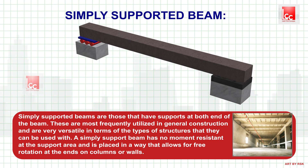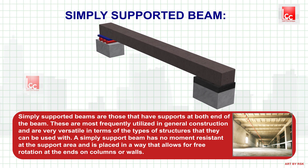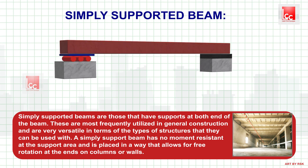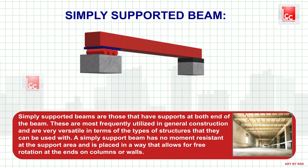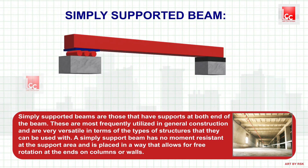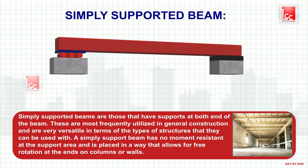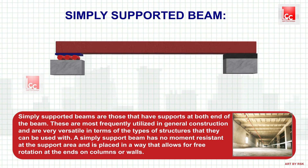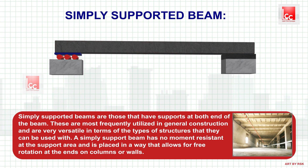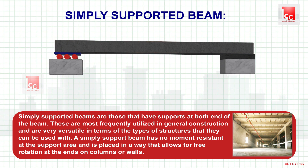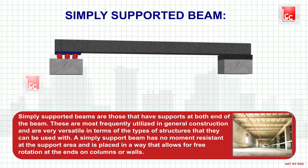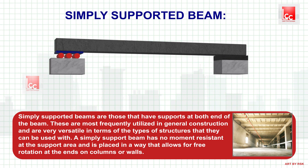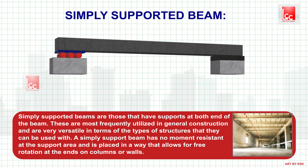Simply supported beam. Simply supported beams are those that have supports at both ends of the beam. These are most frequently utilized in general construction and are very versatile in terms of the types of structures they can be used with. A simply supported beam has no movement resistance at the support area and is placed in a way that allows for free rotation at the end on columns or walls.